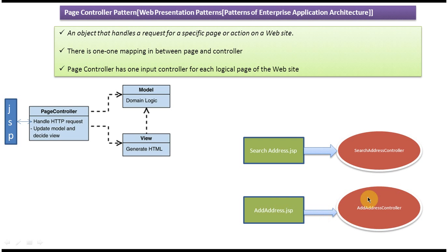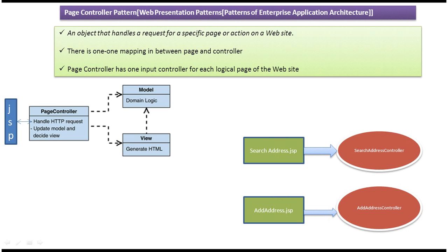So we have two controllers: the Search Address Controller handles the Search Address JSP-related requests, and the Add Address Controller handles the Add Address JSP-related requests. That is the Page Controller design pattern. Thanks for watching, bye.